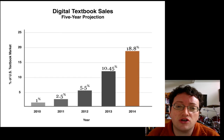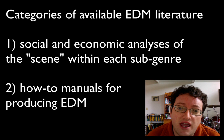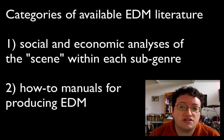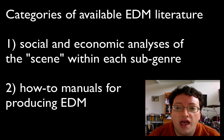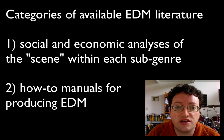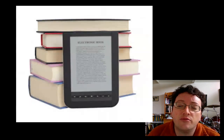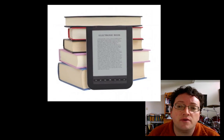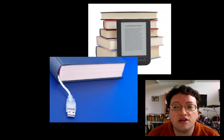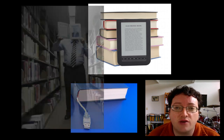The main published works on EDM fall into two categories: social and economic analyses of the scene within each subgenre, and how-to manuals for producing EDM. The first category is interesting and historically rich, as socio-economic considerations played major roles in the formation of many genres of EDM. The second category is important because it focuses on a summary of commonly used techniques for specific genres of EDM.